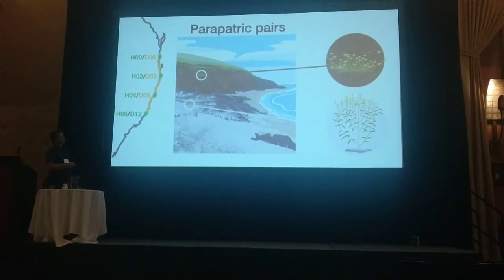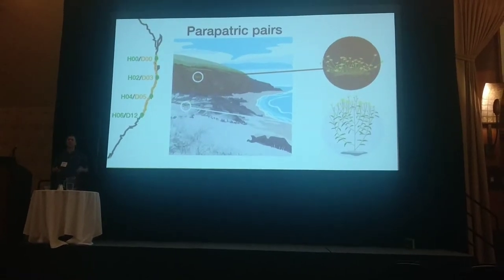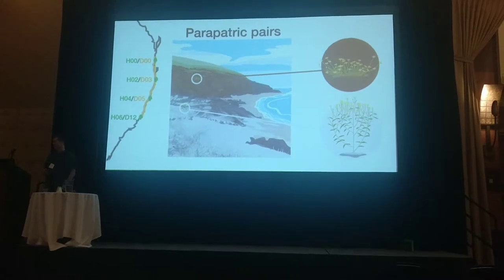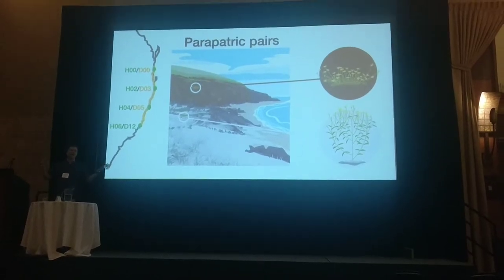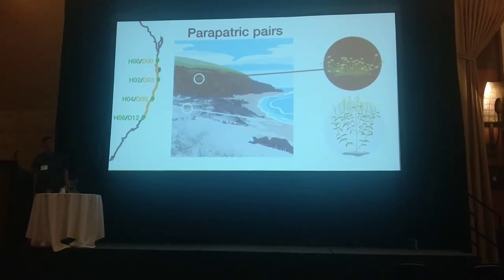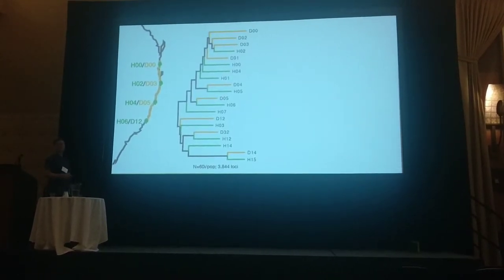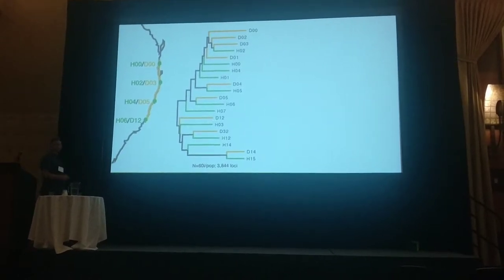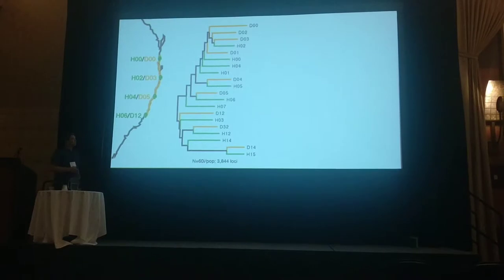These ecotypes — both of them — occur in parapatry along the coast. There are many pairs of them; many are separated by just a few meters, despite occupying contrasting soils. Others are about a few hundred meters apart. They share pollinators and their seeds disperse long distances. One interesting feature of the system is that the ecotypes, similar to the previous alpine example, group by geography and not by ecology.